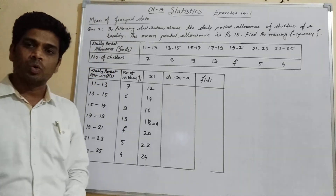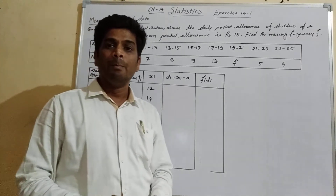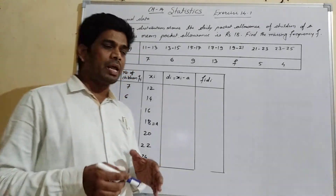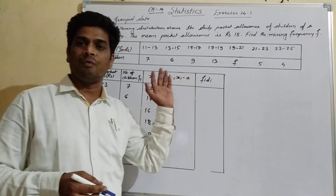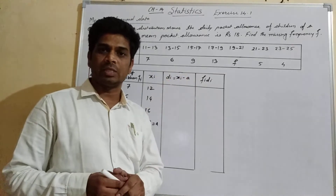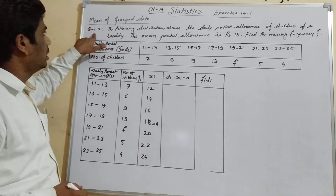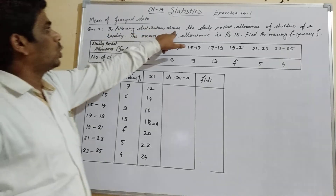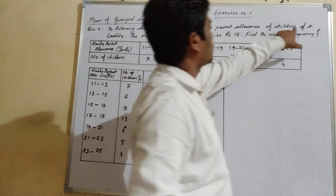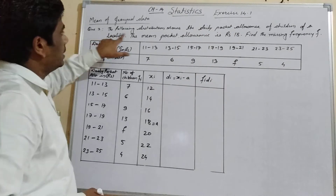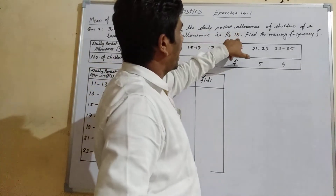Let us learn how to find a missing frequency if the mean is given. We can apply any method to find the missing frequency. Let us take question number 3: the following distribution shows the daily pocket allowance of children of a locality. The mean pocket allowance is 18 rupees.